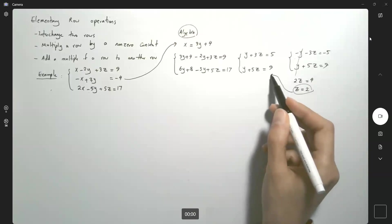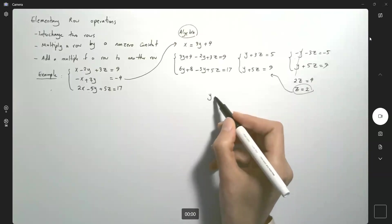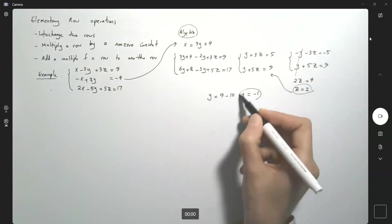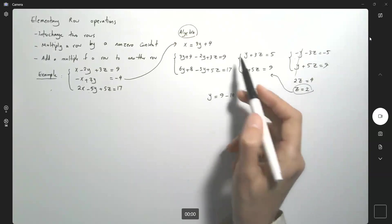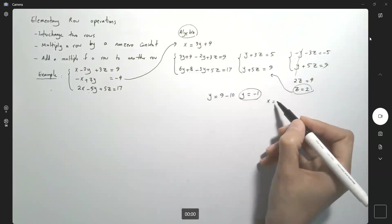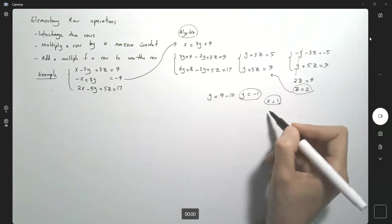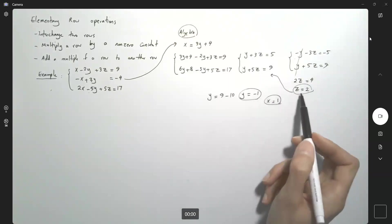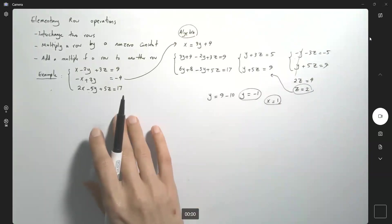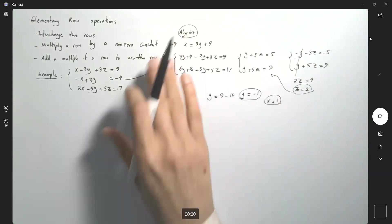Since z is equal to 2, we can solve for y. y is equal to 9 minus 10, so y becomes negative 1. Since you have your y, you can use the very first equation and your x becomes negative 3 plus 4 which is 1. So the solution for the system is 1, negative 1 and 2. This was an easy system of equations that you can solve using algebra.